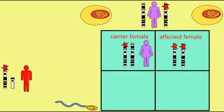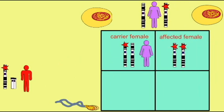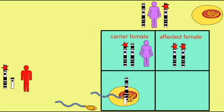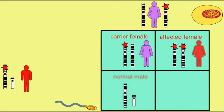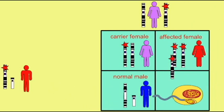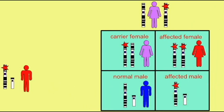One quarter of the male offspring would be normal if they receive the normal X chromosome from their mother, and one quarter of the male offspring would be affected if they receive from their mother the X chromosome with a recessive mutation.